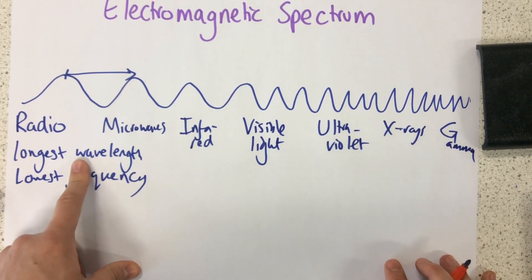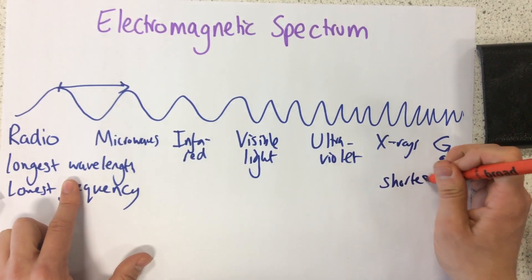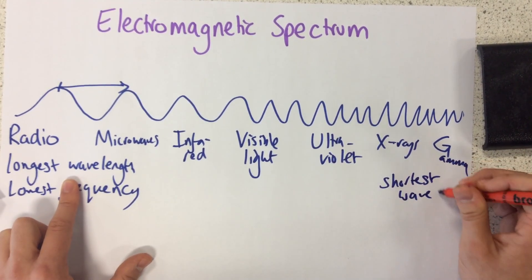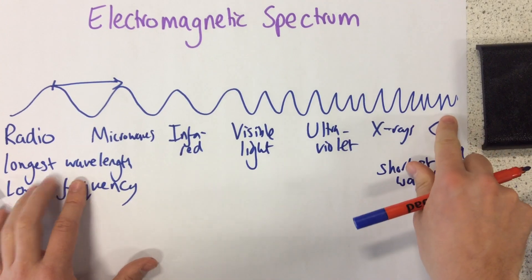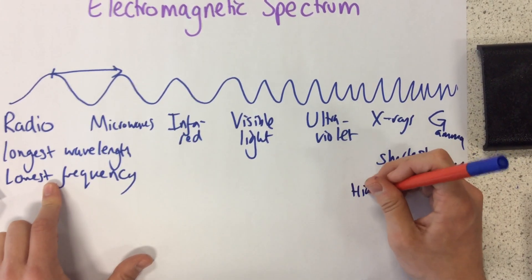So, at this end we have longest wavelength, so therefore our gamma, they have the shortest wavelength. This is the lowest frequency. Our gamma up here has the highest frequency.